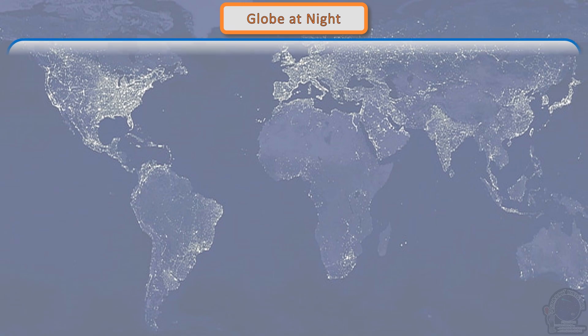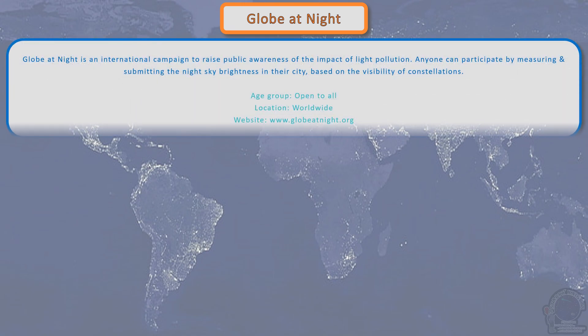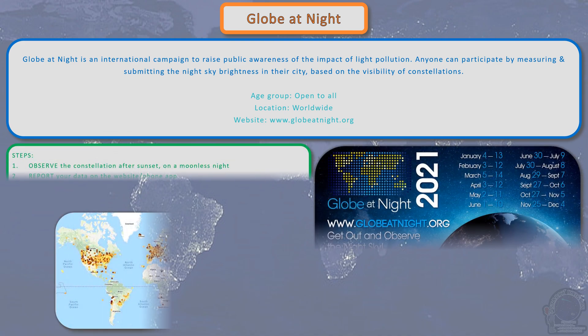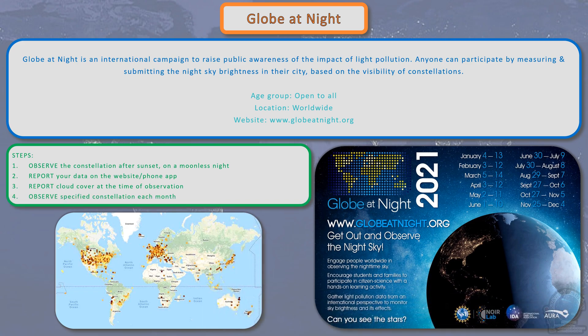This is an international campaign to raise public awareness of the impact of light pollution. Anyone can participate by measuring and submitting the night sky brightness in their city based on the visibility of different stars in a constellation. You can take part by downloading the mobile app or on the website. Instructions for the observation are provided and data can be submitted through a simple online form.